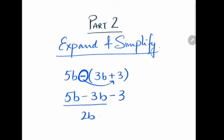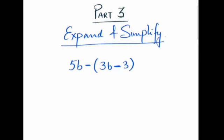We'll have 5b minus 3b is 2b minus 3. Part 3: expand and simplify. Now this time we have 5b minus bracket 3b minus 3. Again we are multiplying with negative, so it's 5b minus 3b, and minus and minus becomes plus 3. So we have 2b plus 3.